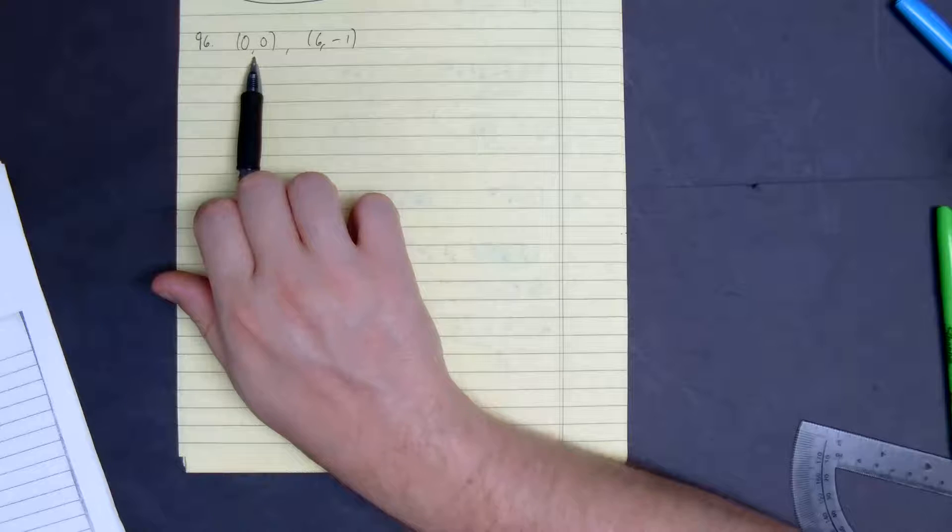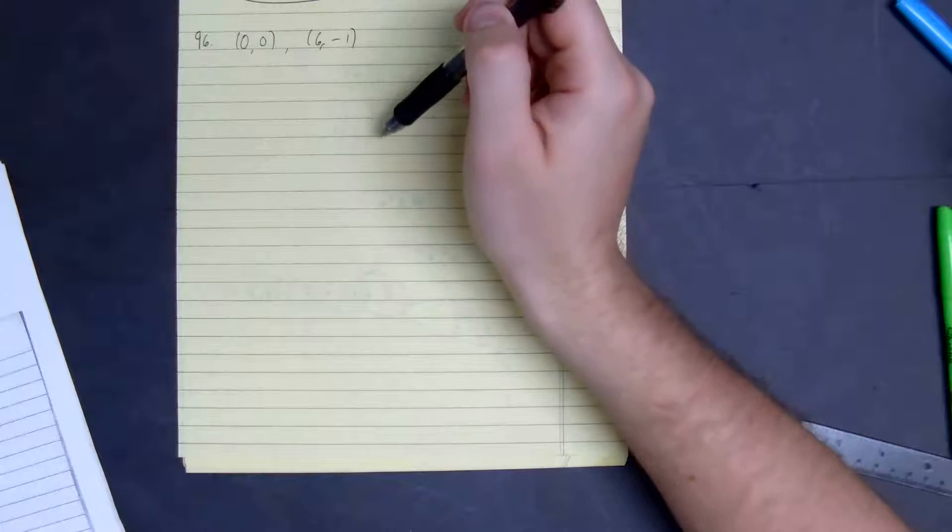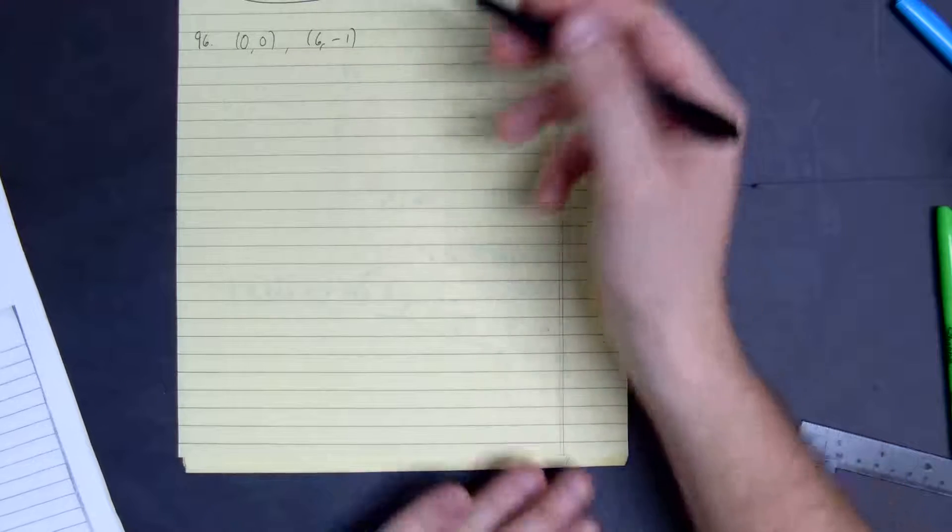So all we really need to know is the slope. You can kind of do the slope in your head, which would be just negative 1 over 6, but we could just confirm it.